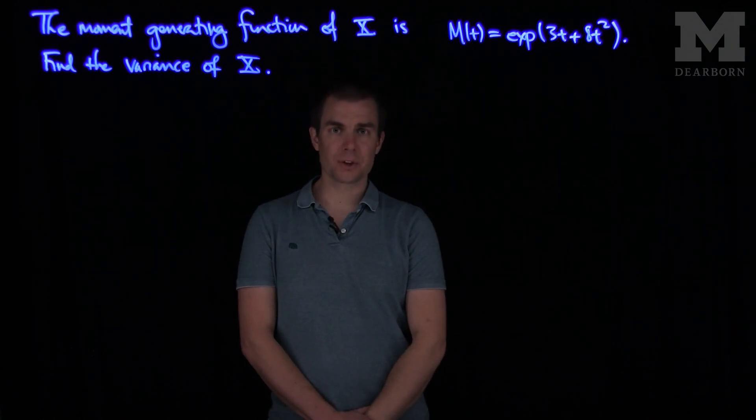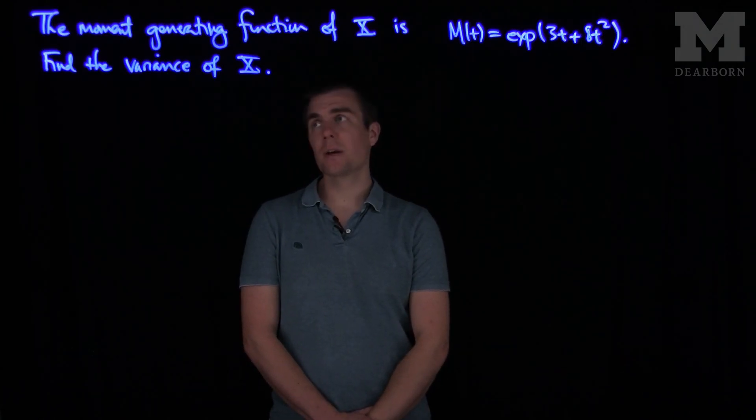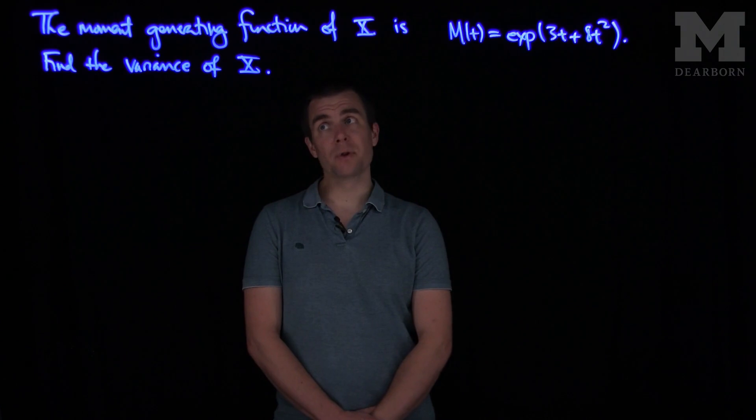Hello students. In this video, we'll see the solution to the second problem on the quiz. In this problem, we're given that the moment generating function of a random variable X is M(t) = exp(3t + 8t²).